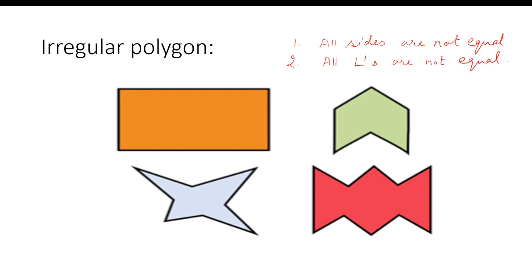Here you can see all sides are not equal. I am taking the example of this quadrilateral, that is a rectangle. Children, here you can see all sides are not equal. This side is equal to this side — opposite sides are equal in the case of a rectangle. But all angles are equal, and you all know all angles are of 90 degrees.